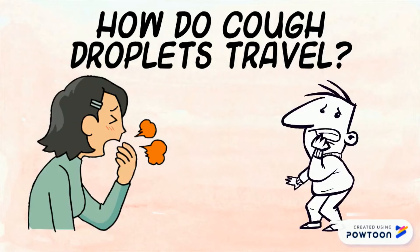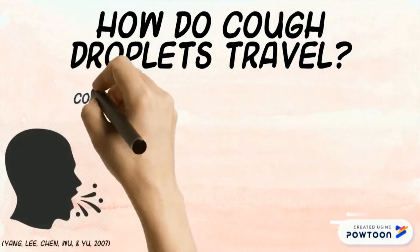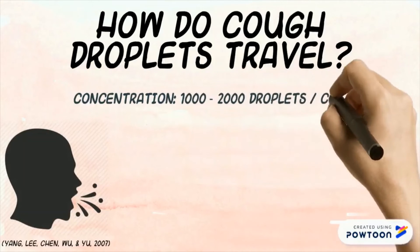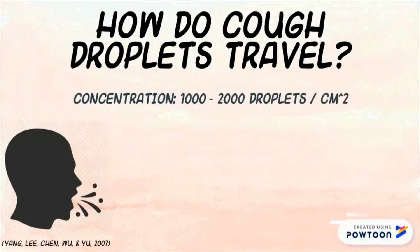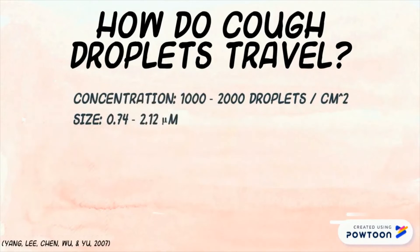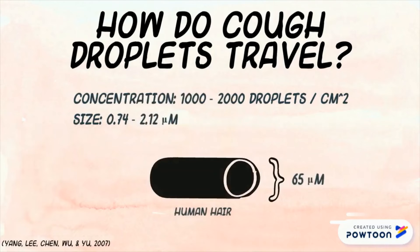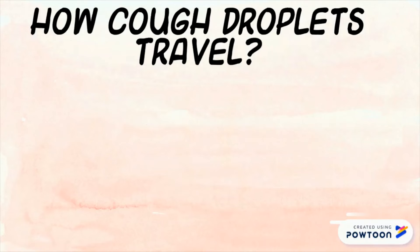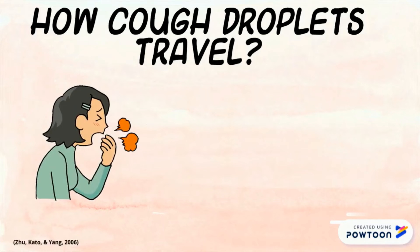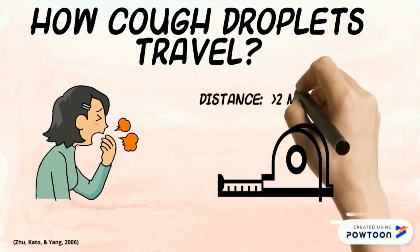The average concentration of droplets coughed is 1,000 to 2,000 droplets per centimeter squared. The average size of these droplets can range from 0.74 to 2.12 micrometers, which is 60 times the width of a human hair. They can travel for more than 2 meters in a calm environment.